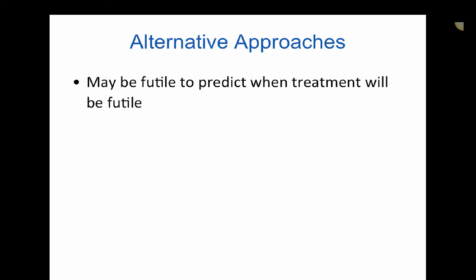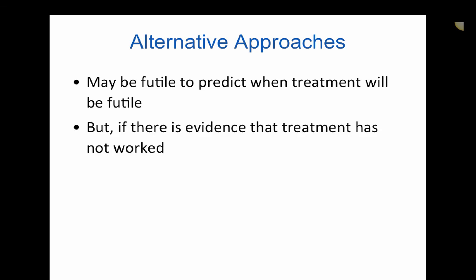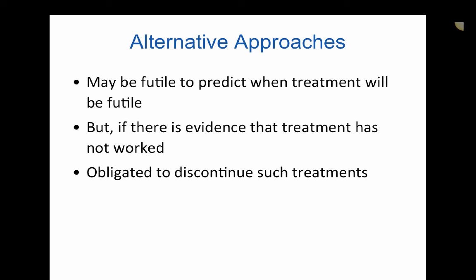Alternatively, rather than trying to predict when treatment will be futile, if there is already evidence that a treatment has not worked, then one should be obligated to discontinue such treatments. For example, a patient with end-stage liver disease who is not on the transplant list and experiences a non-treatable GI bleed and is consuming multiple blood transfusions — one should be able to tell the family that such transfusions will be discontinued.